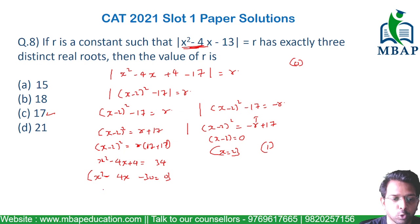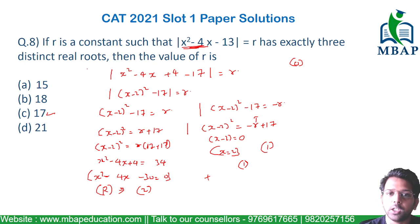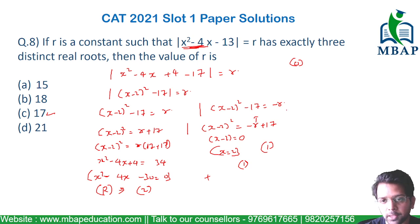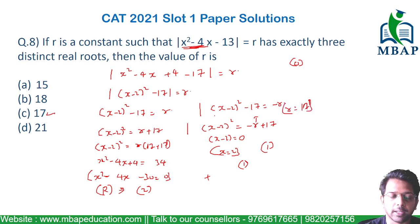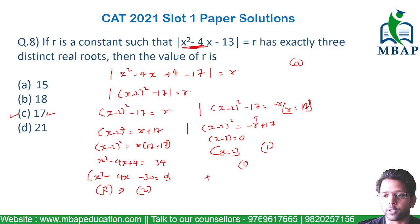Expanding this expression to find the roots, you get two roots here and one root from the other equation, accommodating three real roots in total. This is valid only when r = 17, and hence you will mark option C as the final answer for this question. I hope all of you have understood it well.